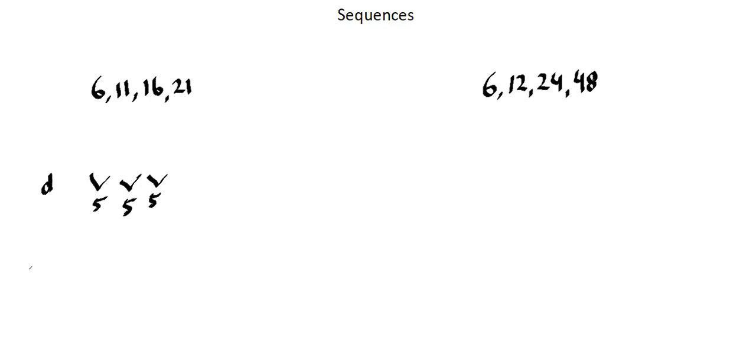Now the meaning of first difference is that this is a linear sequence. Second difference is quadratic sequence. Third difference is cubic sequence. When we have a first difference, a difference at the first level of calculation as we do here, this is a linear sequence.